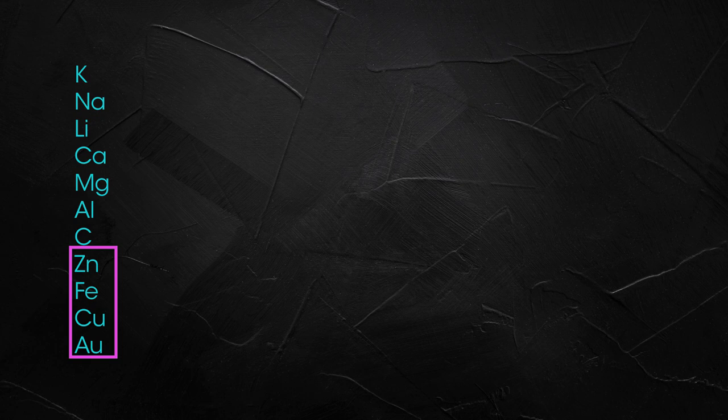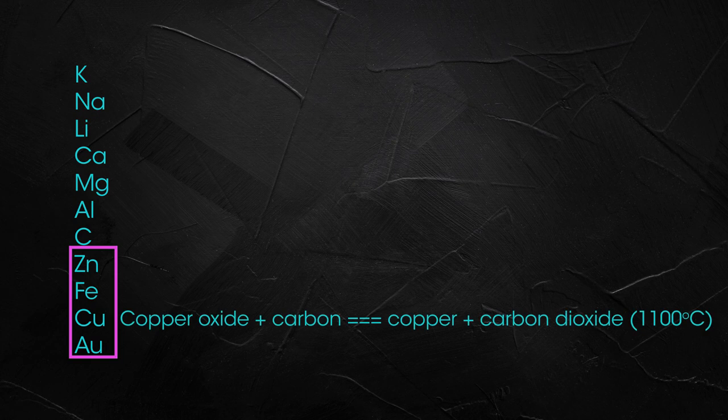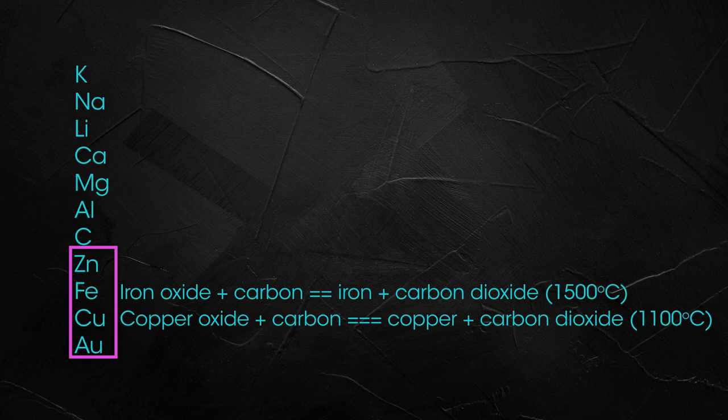Only metals below carbon in the reactivity series can be obtained by reduction of their oxide using carbon. Copper is extracted under less harsh conditions when compared to iron as it's less reactive metal. This in part explains why copper extraction was discovered well before that of iron.